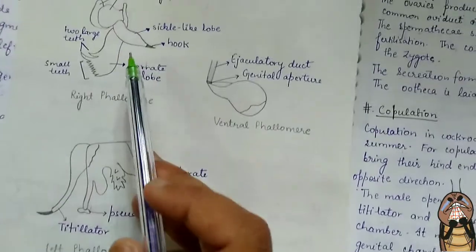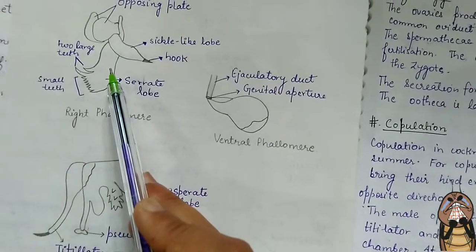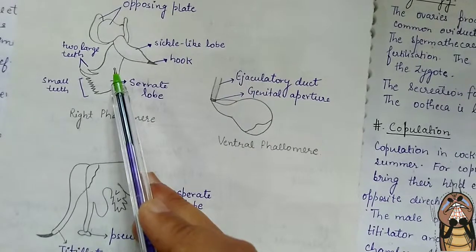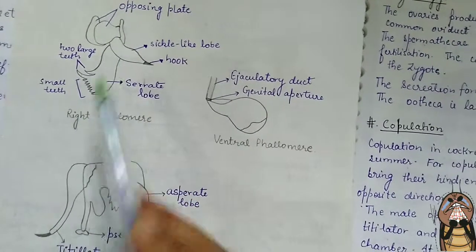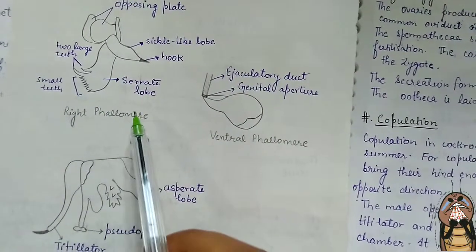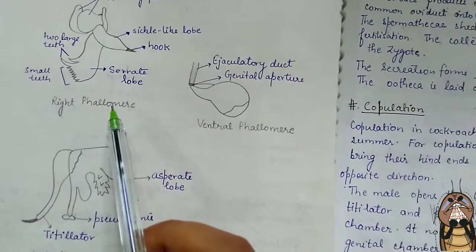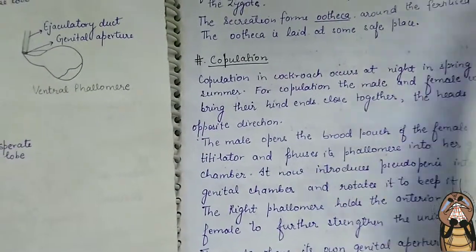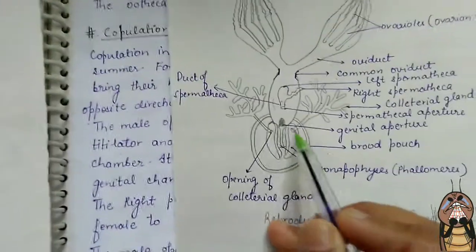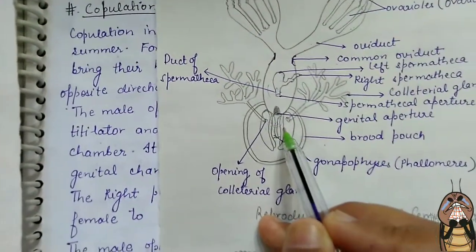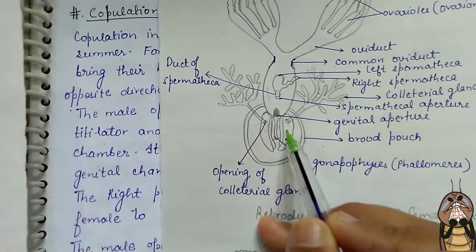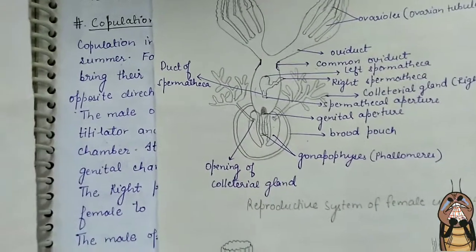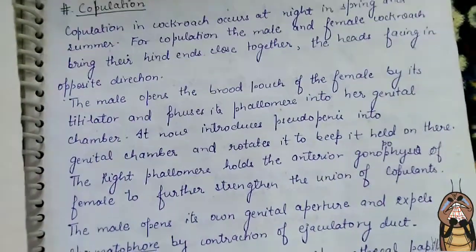The function of the right phallomere is to hold the anterior gonapophysis of the female to further strengthen the union of the copulants. As seen in the diagram of the brood pouch, these are the gonapophyses of the female, and the anterior gonapophysis is held by the right phallomere to strengthen the copulant union.